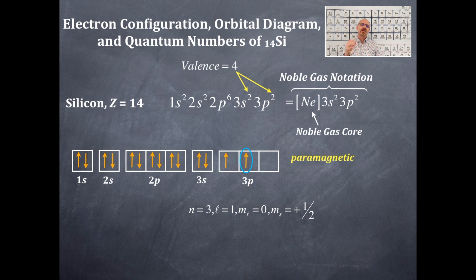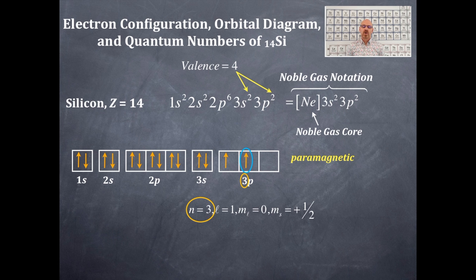I'm going to explain where these numbers are coming from so that you understand it. Where is the N of 3 coming from? It's highlighted in an orange circle — it's a 3p orbital, so N equals 3. Where is the L of 1 coming from? The L of 1 comes from the p-type orbital. S-type orbitals have L equal 0, p orbitals have L equal 1, d orbitals have L equal 2, f orbitals have L equal 3, etc.